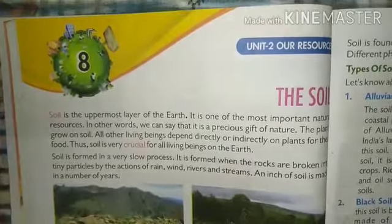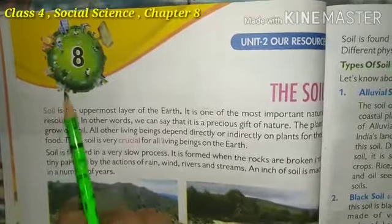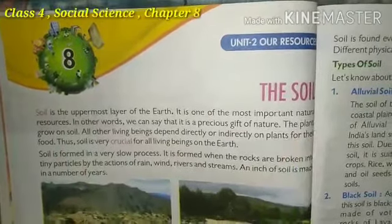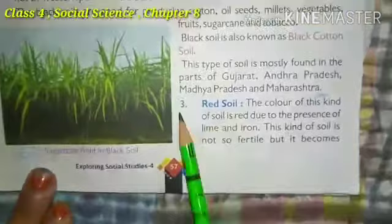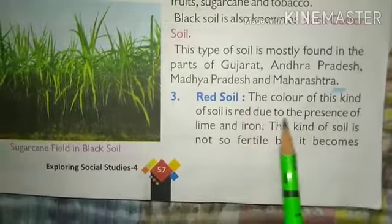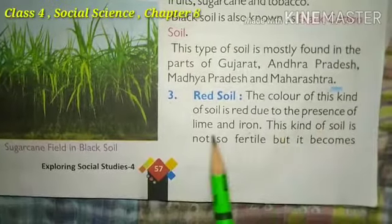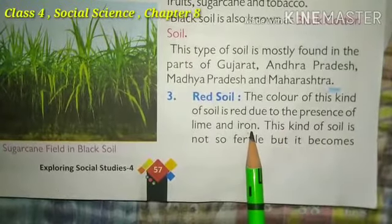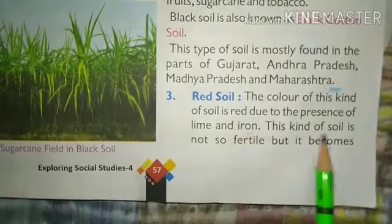Good morning students. It's Class 4th, subject Social Science, Chapter number 8 - The Soil. In our previous class we covered part of the chapter. Today we will start with red soil, the third type of soil. The color of this kind of soil is red due to the presence of lime and iron. Due to the higher quantity of lime or iron, its color is red.